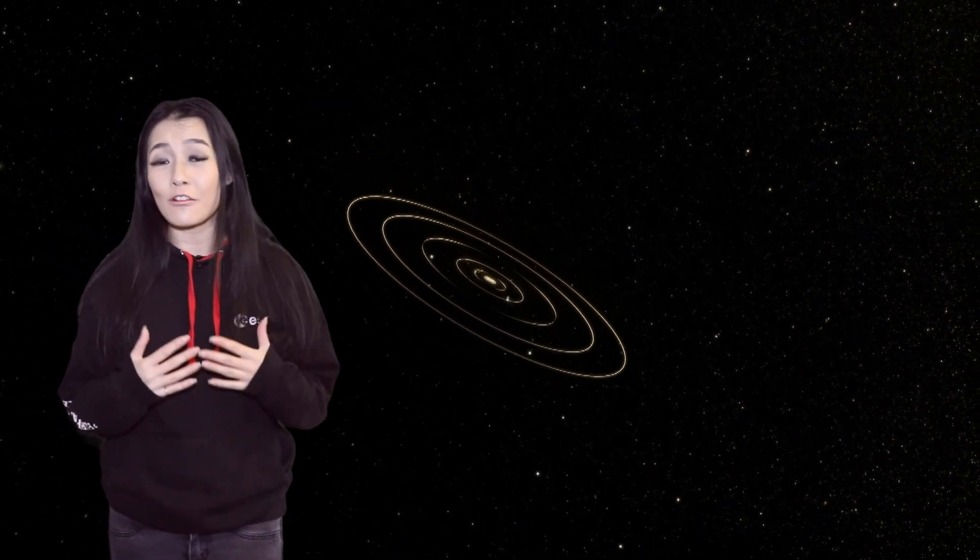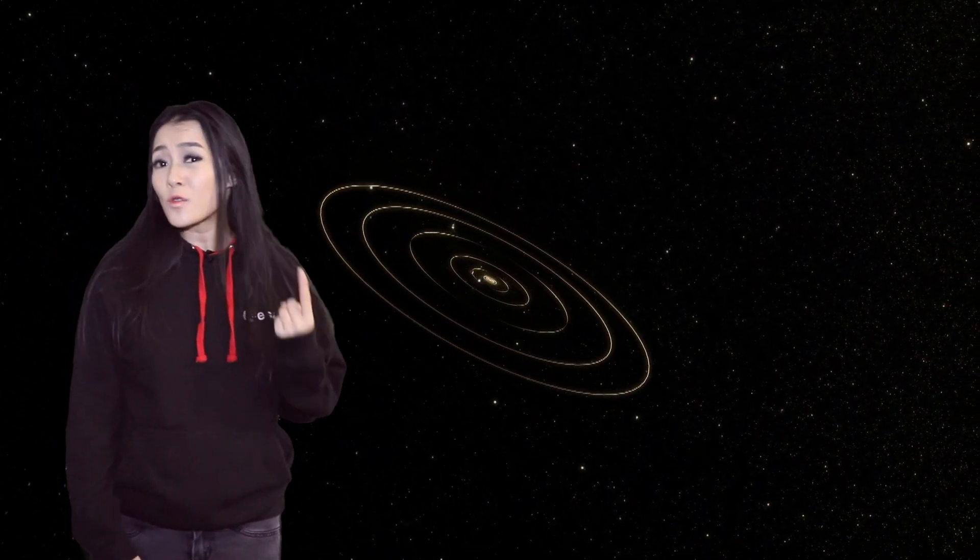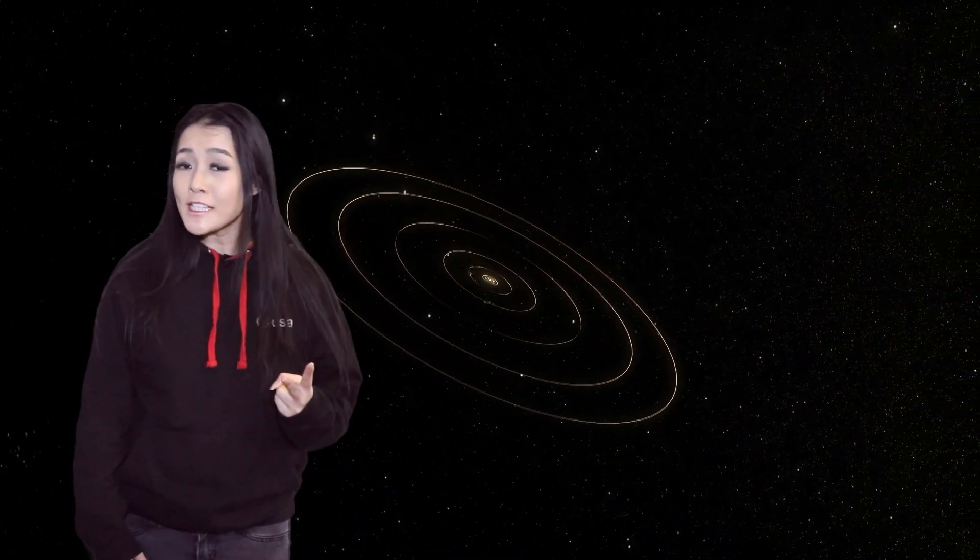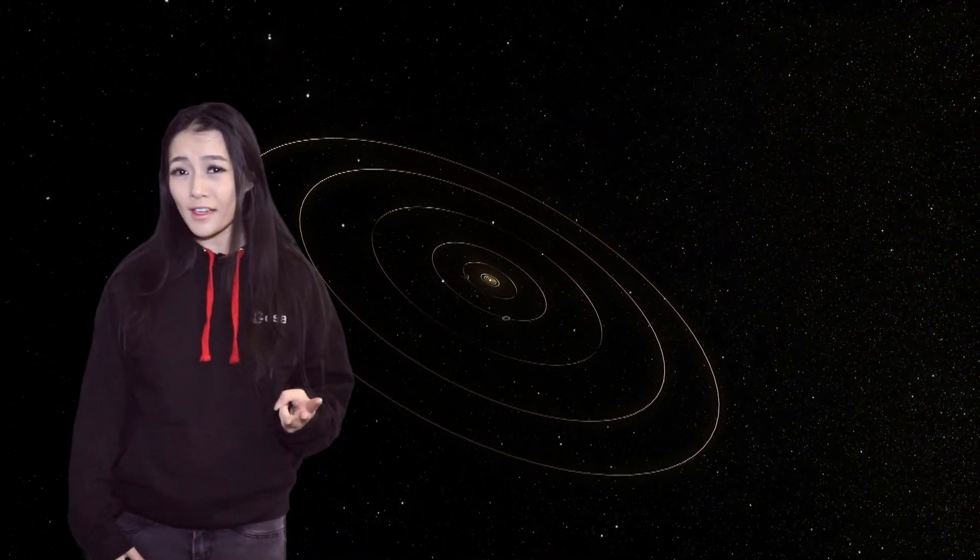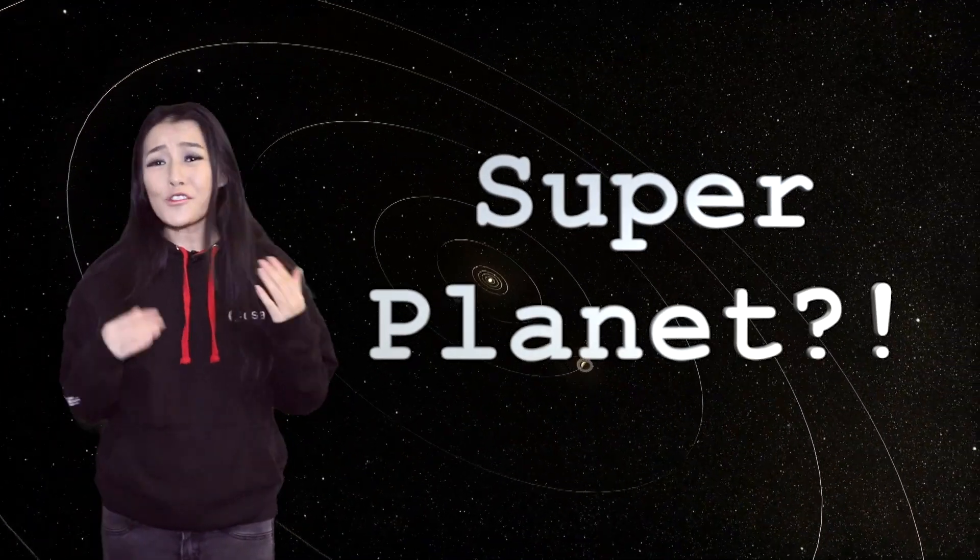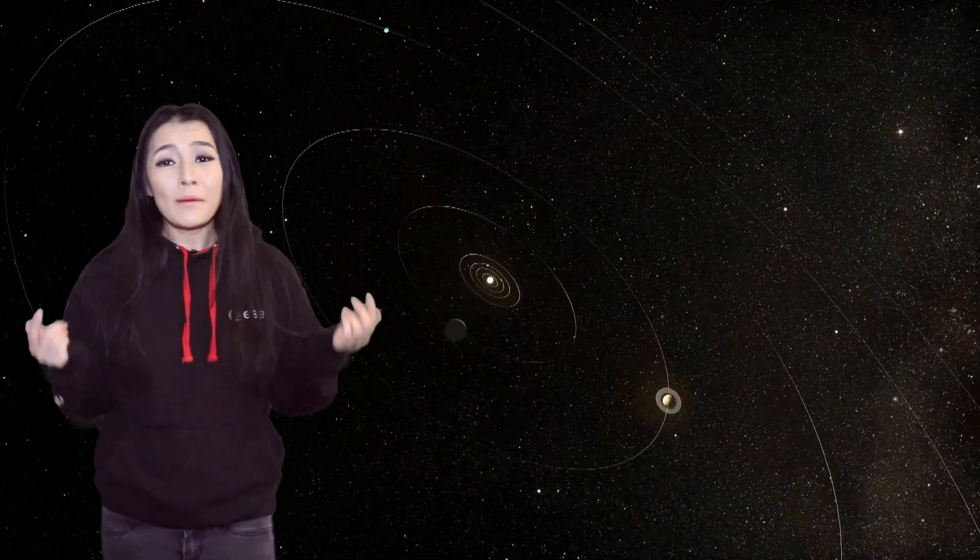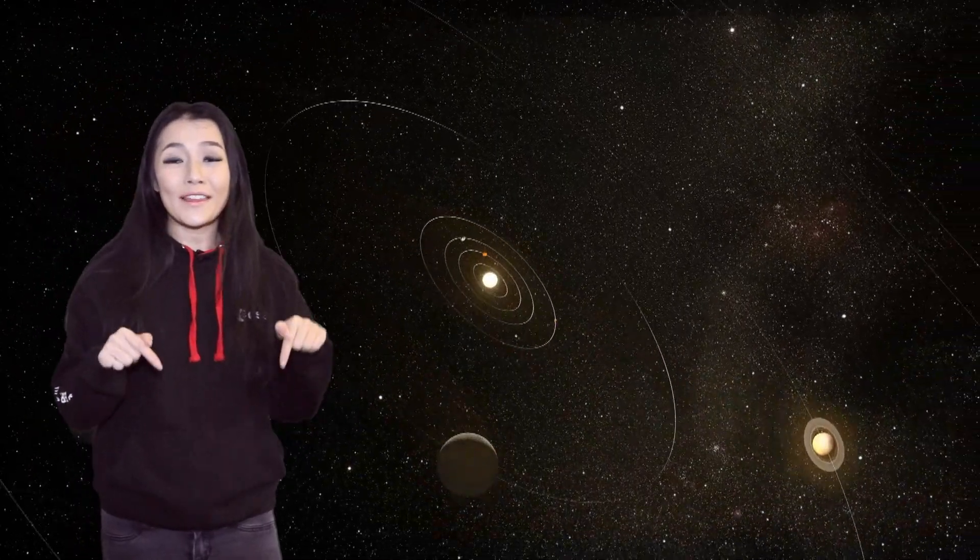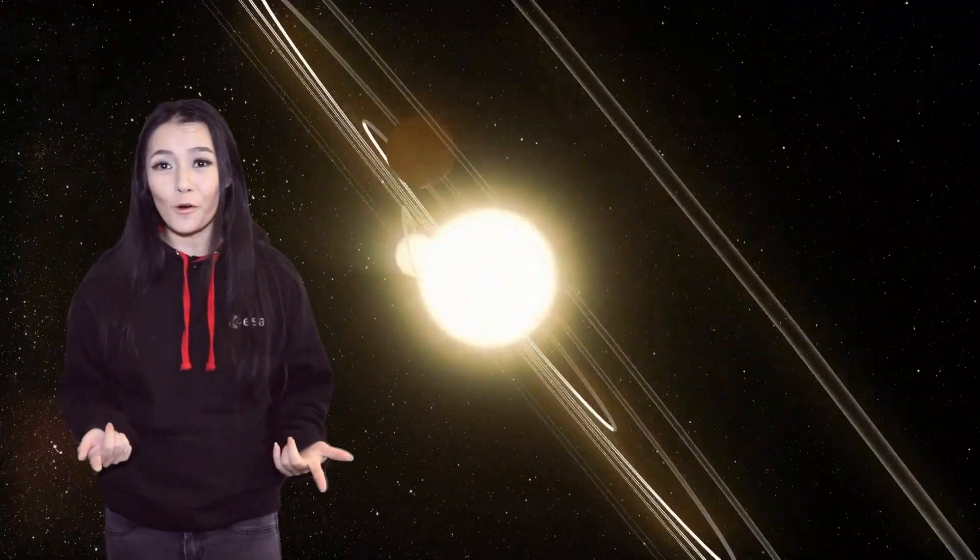So in conclusion Jupiter is not a planet. It doesn't orbit around a star. It's not a dwarf planet or a binary star or a failed star either. Perhaps a super planet? I don't know. I'm not sure what it could be but maybe you can let me know down below in the comments what you think that Jupiter should be called.